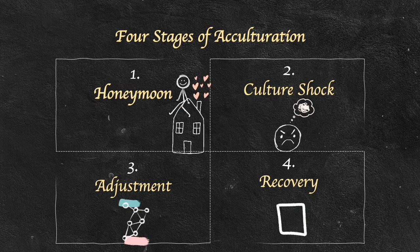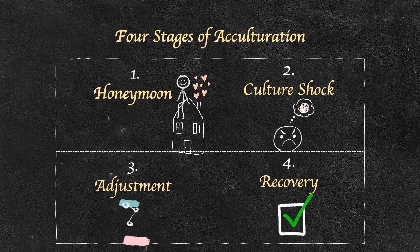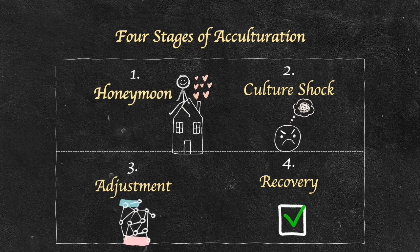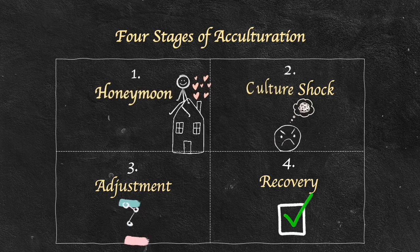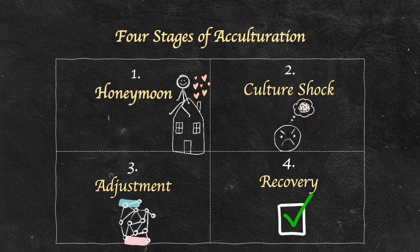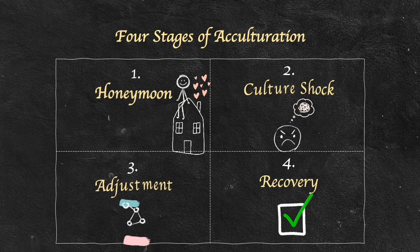Summing up what's been said, acculturation is a process that occurs as a person adapts to the second culture. The four stages of acculturation are: the honeymoon, which is being excited about the new culture; culture shock, where people are distressed because of the differences between the two cultures; adjustment, where they gradually see the similarities; and finally recovery, where they feel as though they are part of the community.